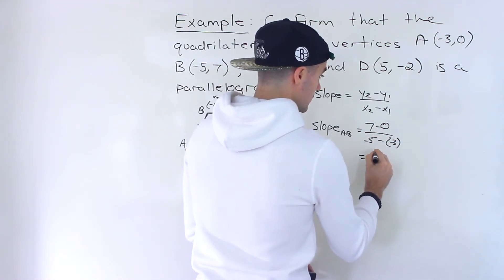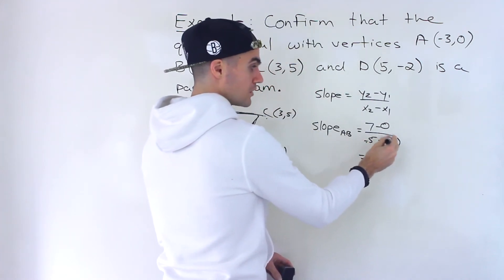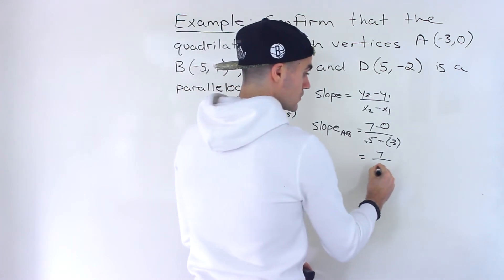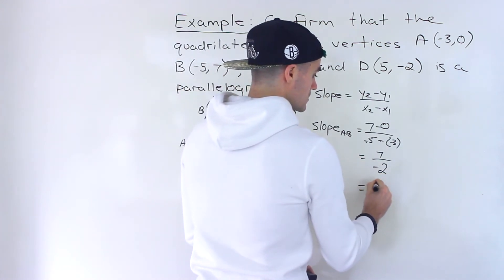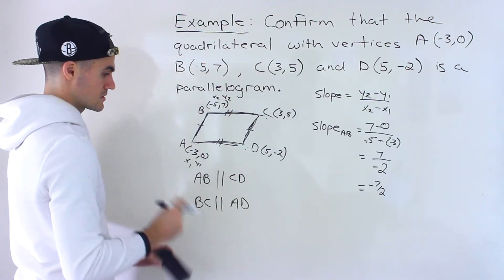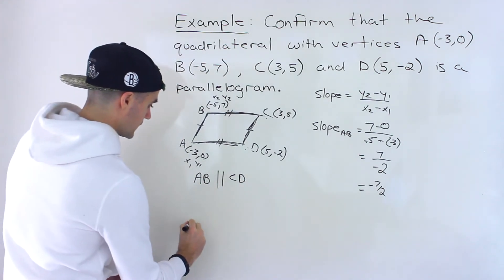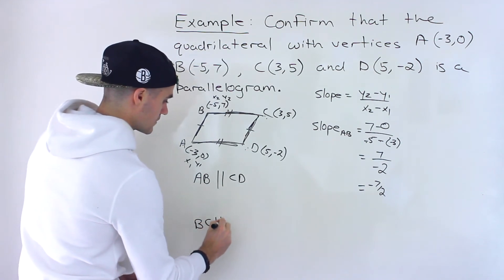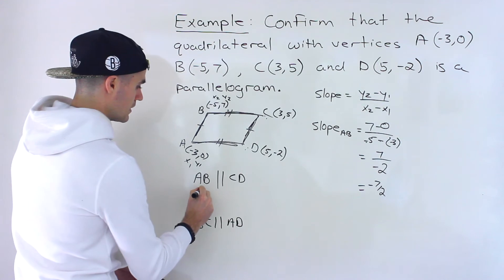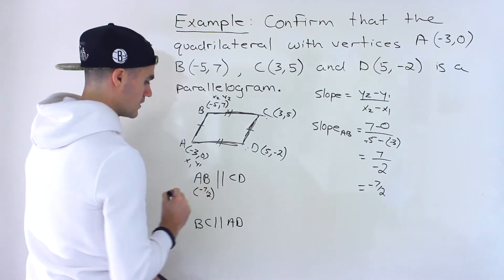So we'd end up with 7 over -5 plus 3. These two negatives turn into a positive would give you -2. So -7/2 is the slope. So let's keep track of these down here. So this slope here is -7/2.